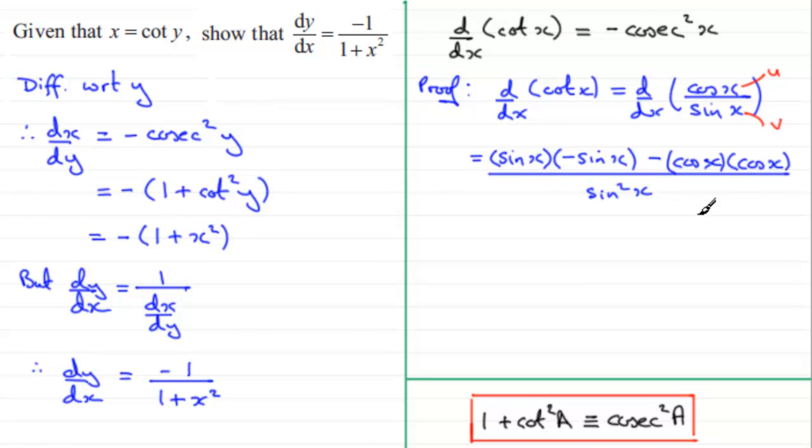Just tidy this up. And, here we've got minus sine squared x, and here we've got minus cos squared x. If I pull minus out the front, though, I've just got sine squared x plus cos squared x. And, that's all over sine squared x.